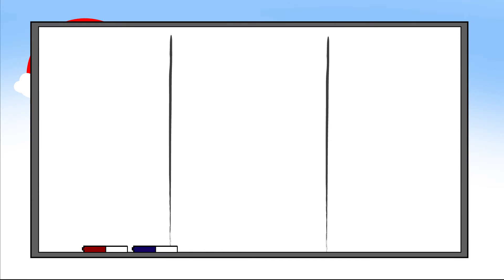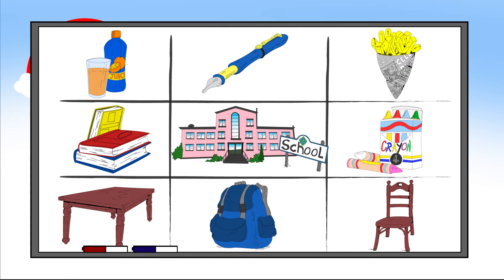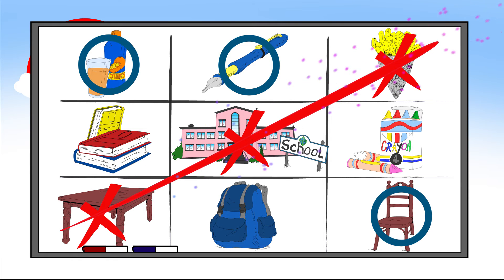Now let's practice that vocabulary through a game on the whiteboard. Put your class into two teams and ask your students to look at the pictures from the story. Can they remember the vocabulary? Let's check: team number one chooses 'pen', team number two chooses 'chips', back to team one again — they choose 'juice'.